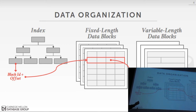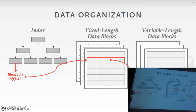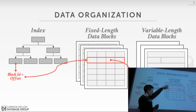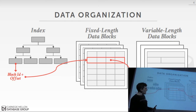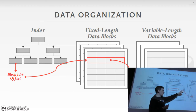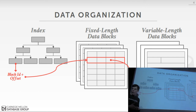We showed this picture at the beginning of the semester. This is the basic overview of how an in-memory database is architected. We have our in-memory index; we do a lookup on some key, we end up with a block ID and offset. This points to some fixed-length data block, and the offset tells us where to jump and find our tuple. Any attribute larger than 64 bits will have a pointer to some location in a variable-length pool.